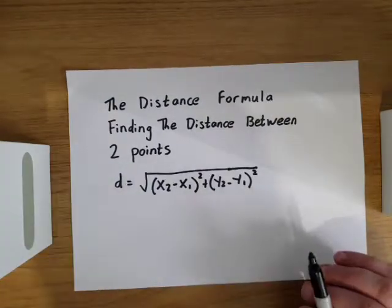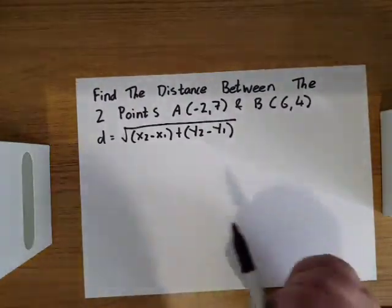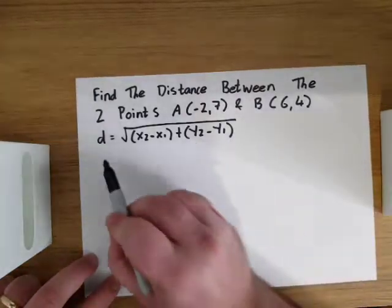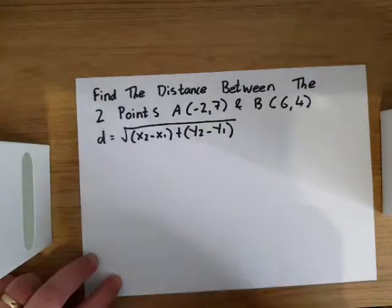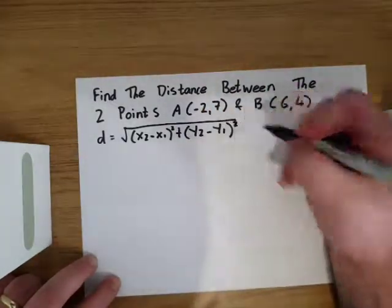So we have a quick example for you. We want to find the distance between the two points: point A (-2, 7) and point B (6, 4) using the formula d equals the square root of x2 minus x1 all squared plus y2 minus y1 all squared.